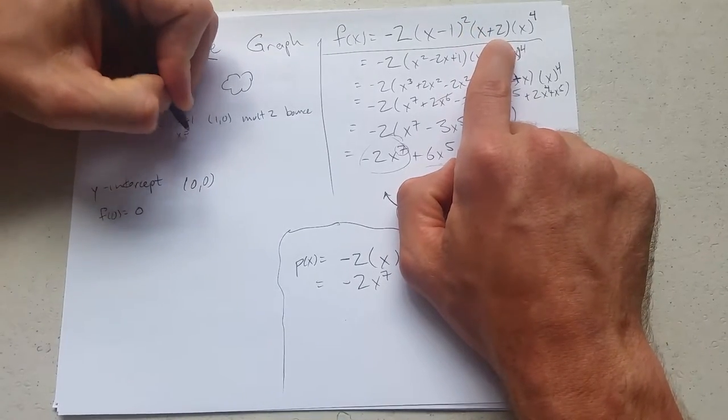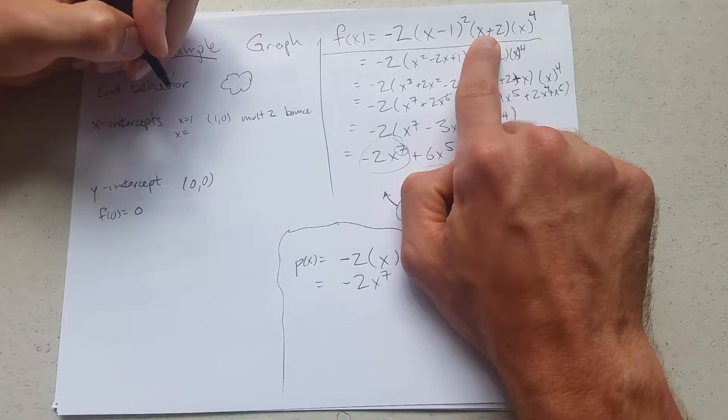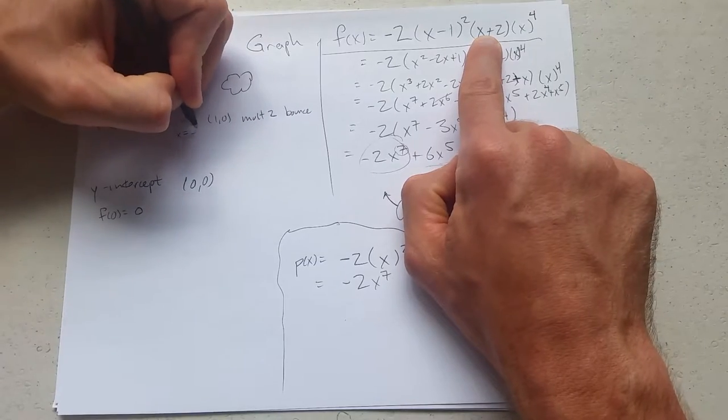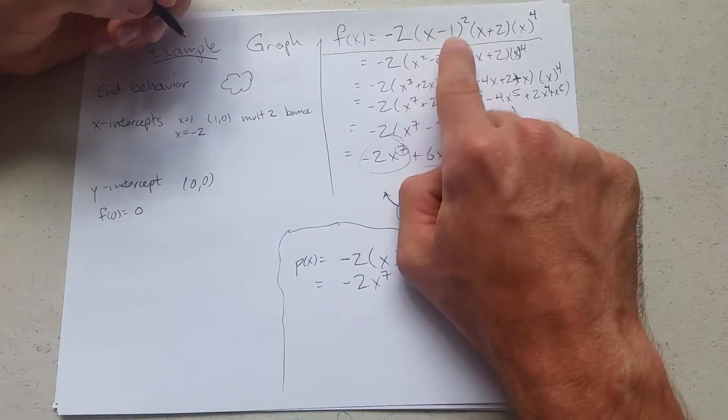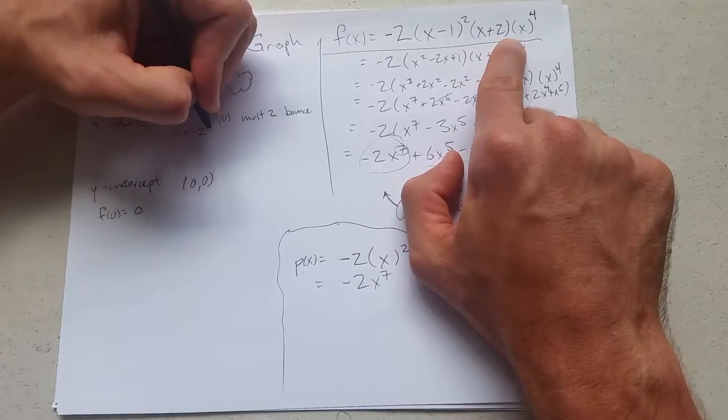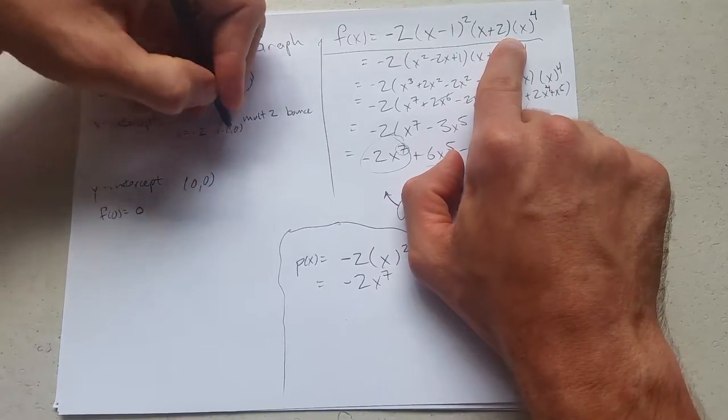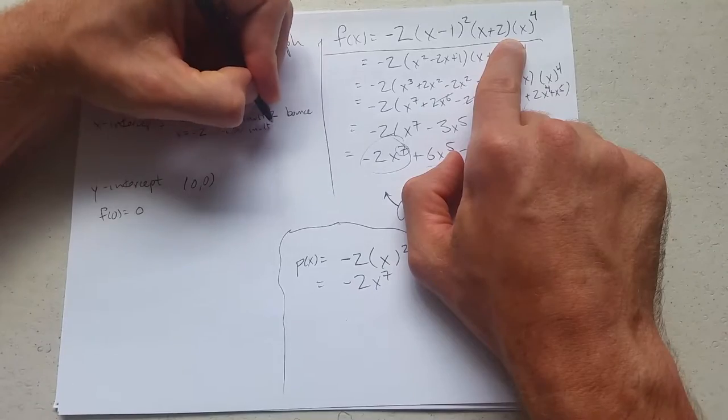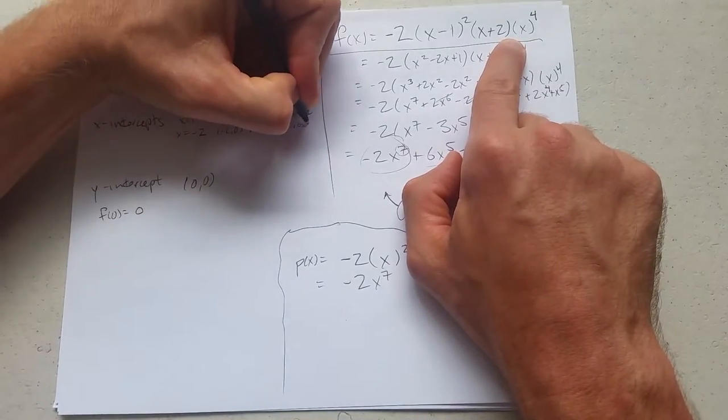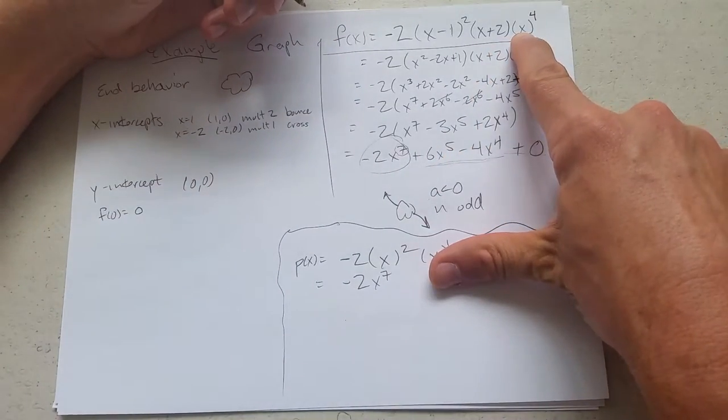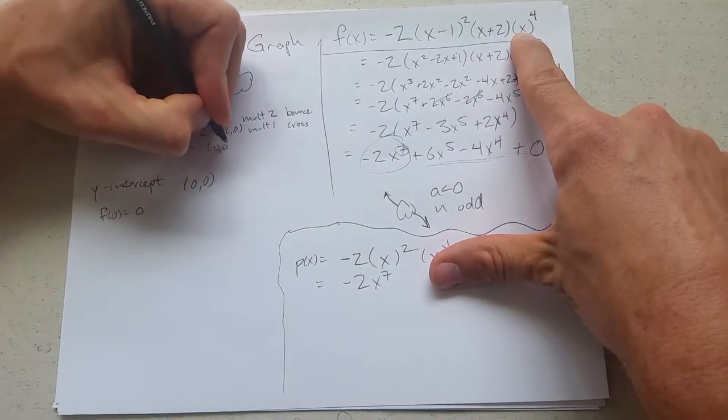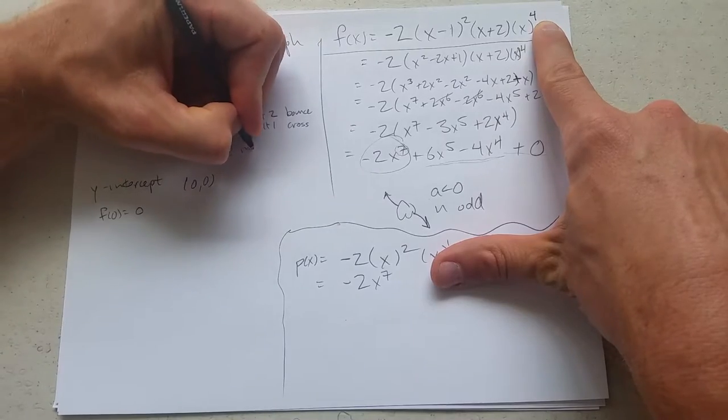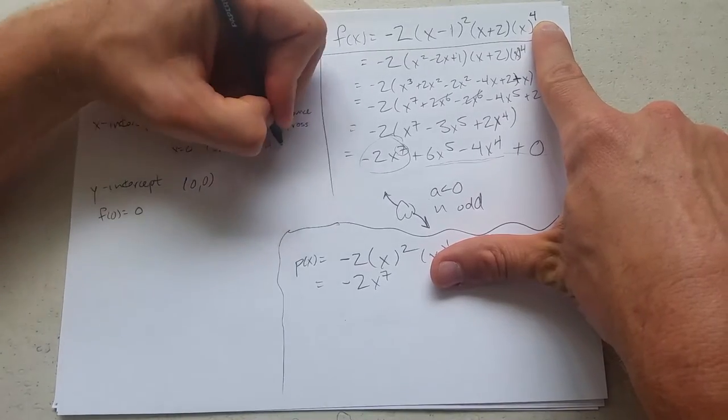Next up. Not positive 2. But what x-value makes this 0? X equals negative 2. Be very careful. Positive 1 makes this 0. Negative 2 makes this 0. Negative 2 is 0. Multiplicity 1, which means cross. Last up. What makes this 0? X equals 0. So you get 0, 0. Multiplicity 4. This is a bounce.